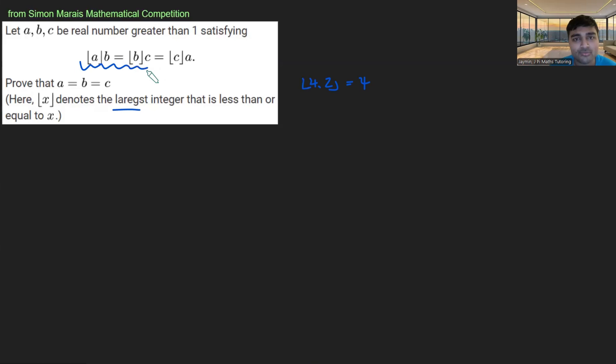Let's firstly make an observation by just rearranging the first part here. So we've got floor of A times B equals floor of B times C. Just a simple rearrangement there gives me that B over floor of B equals C over floor of A.